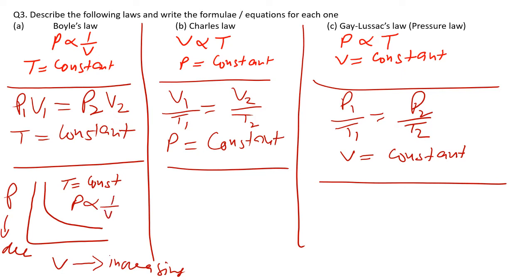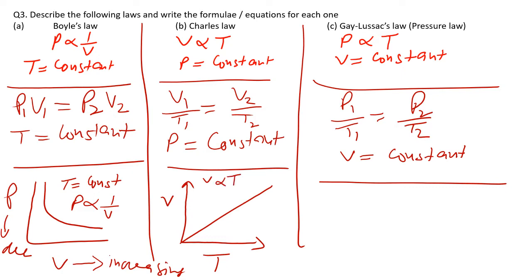The graph for Charles' Law is between volume on the y-axis and temperature on the x-axis, and it forms a straight line. If the temperature is increasing, the volume will also increase in the same way — the volume is directly proportional to temperature, and the pressure must be constant.